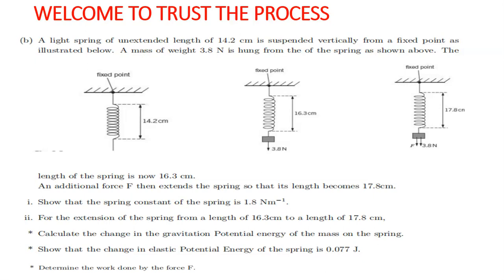The question reads: a light spring of an extended length of 14.2 centimeters is suspended vertically from a fixed point. A mass of weight 3.8 Newtons is hung from the spring, and the length of the spring is now 16.3 centimeters.